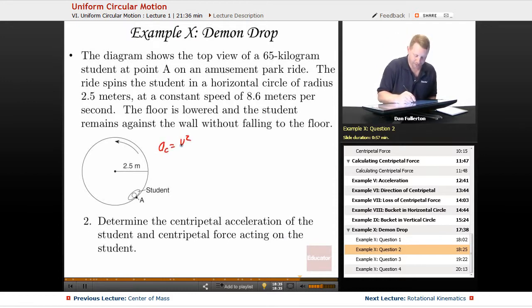Well, centripetal acceleration is v squared over r, so that's just going to be 8.6 meters per second squared divided by our radius of 2.5 meters.